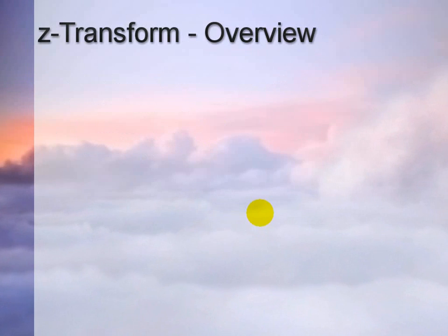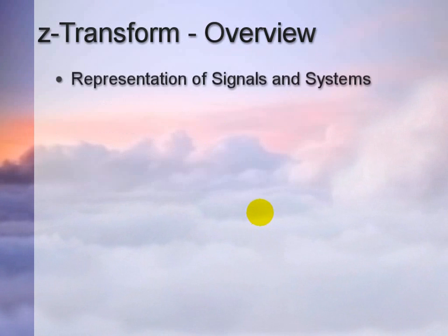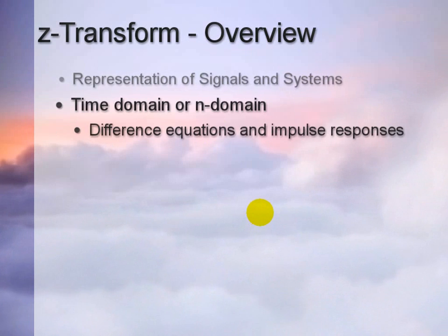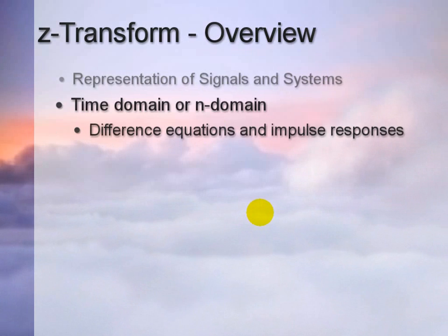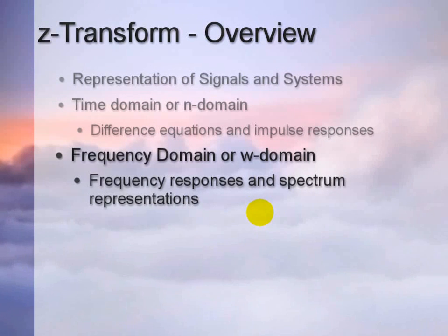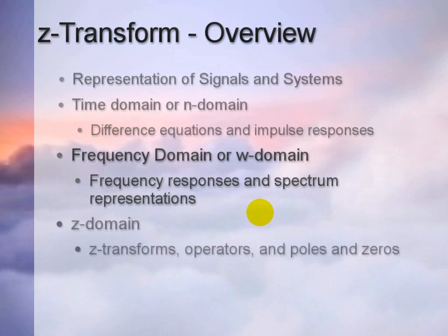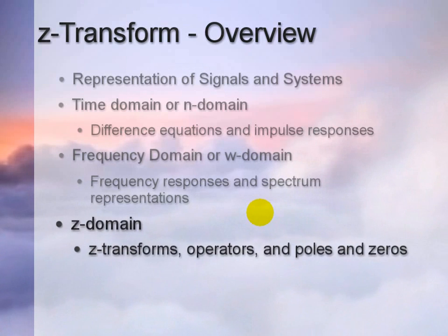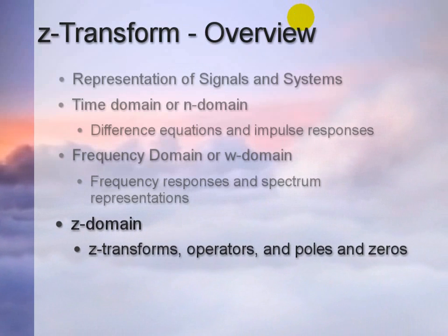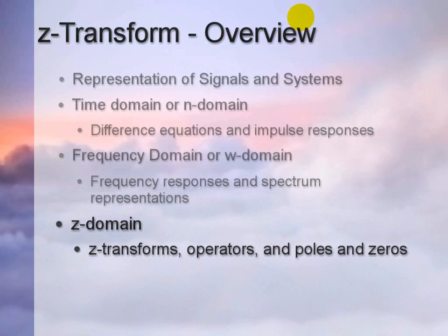We're also going to take a look at three representations of signals and systems. The first one is the time domain, or N-domain, which involves difference equations and impulse responses. The second one is the frequency domain, or omega domain, which involves frequency responses as well as spectrum representations. The third, and most important when talking about digital signals and systems, involves the Z-domain, which requires knowledge of Z-transforms, its operators, as well as poles and zeros.